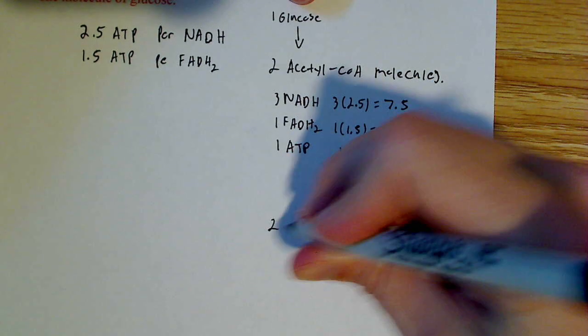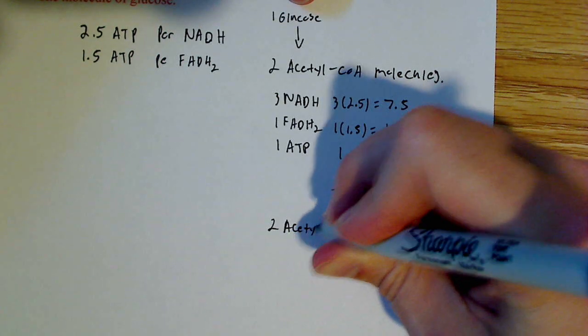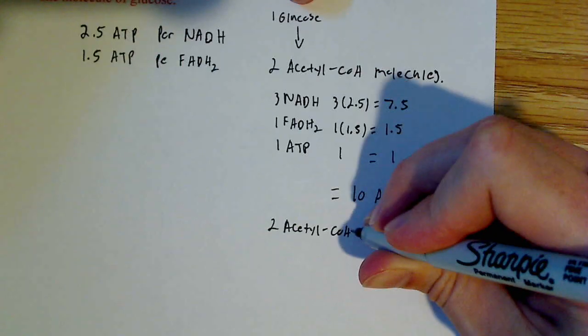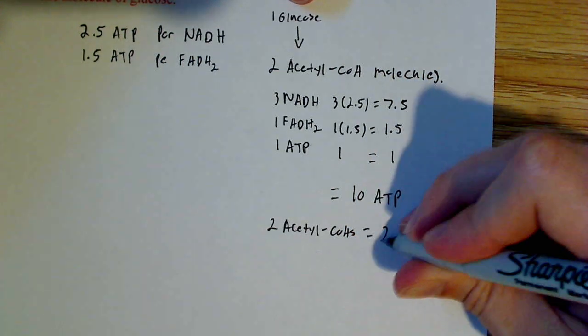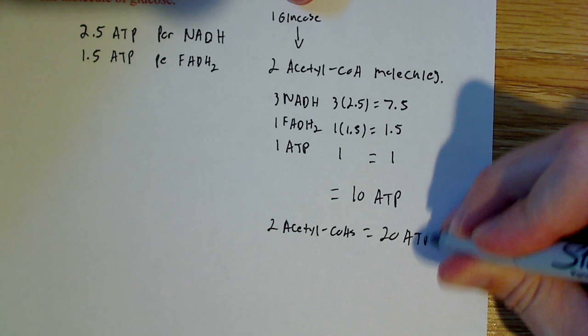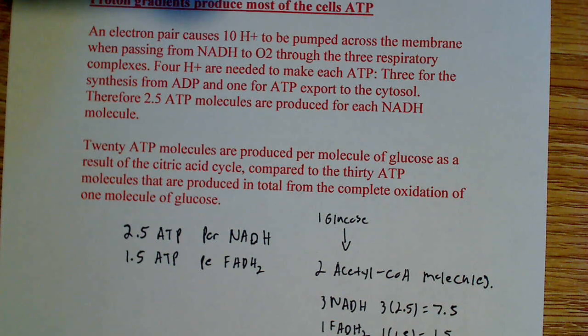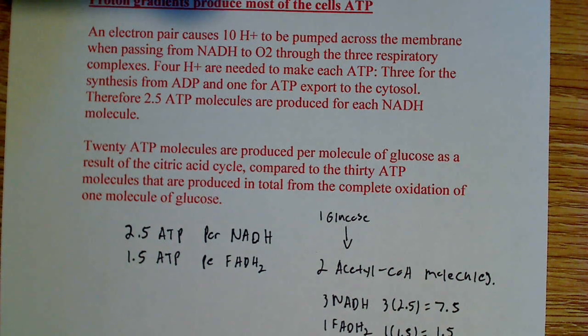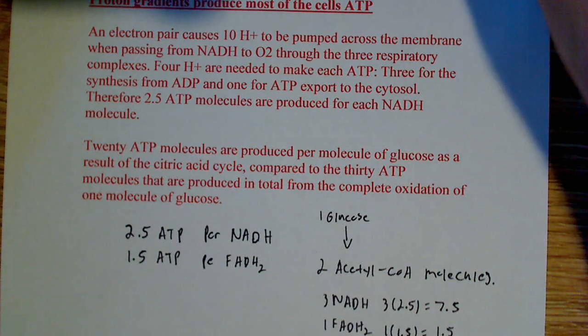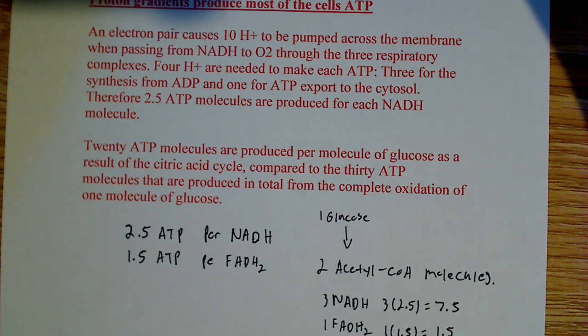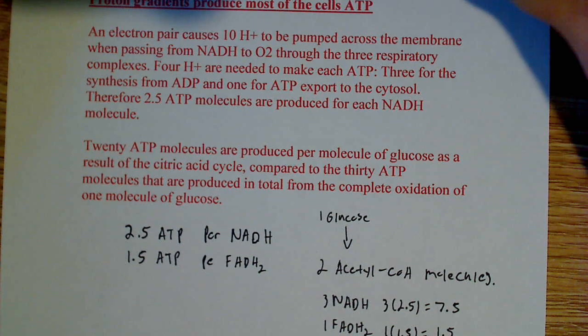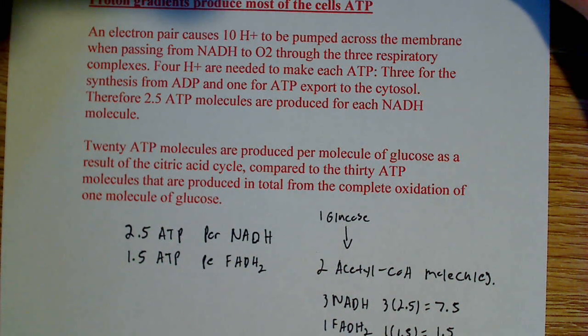So all you have to do if you have 2 acetyl-CoAs, it will equal 20 ATPs, because you would simply double this number. So that's how they get the number of 20 ATP molecules produced per glucose molecule. All right? So I just wanted to work that out for you and show you, because this is another common type of question. They ask you to calculate how many ATPs you'll produce under certain circumstances.